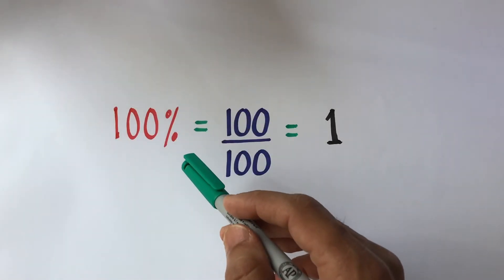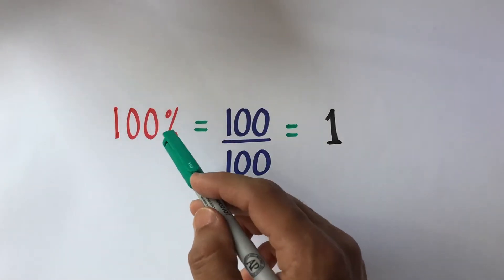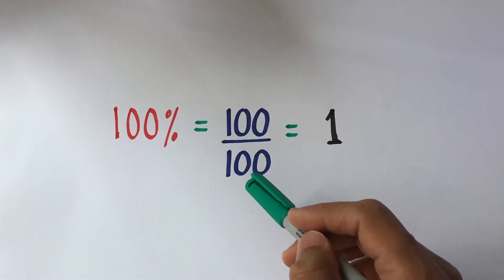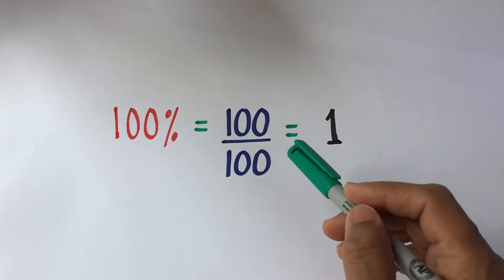Before we begin with the conversion, we need to understand that 100% is same as 100 over 100 or 100 per 100 which is same as 1.